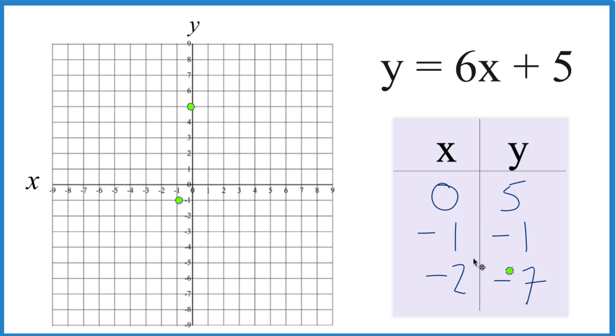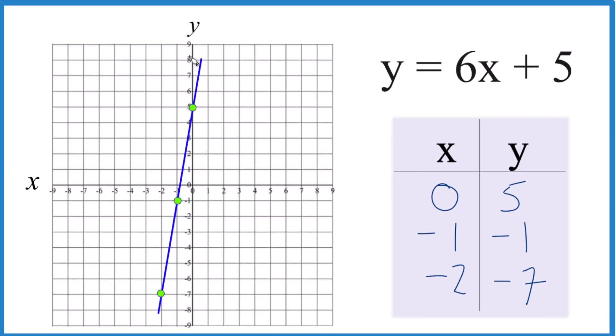x is negative 2, y is negative 7 down here, and you can see the line there. Let's put a line through that. Then we'll put these arrows here to show it goes to infinity. That's the equation for y equals 6x plus 5.